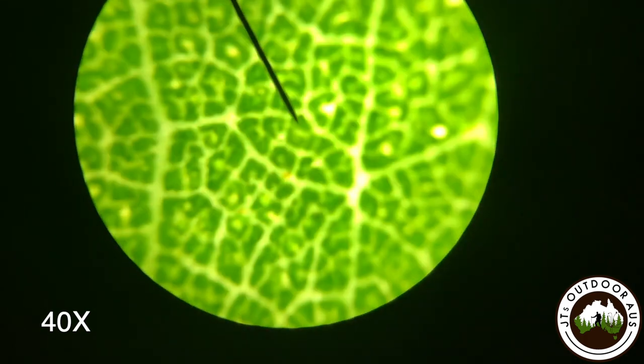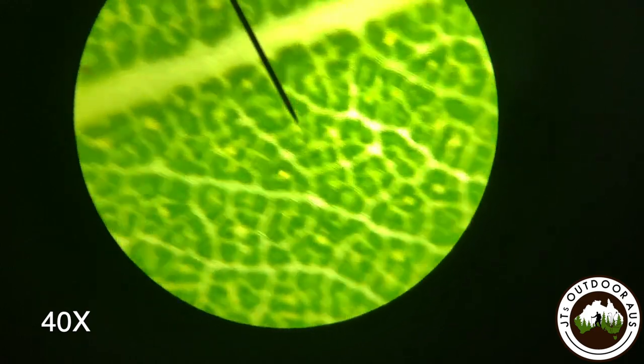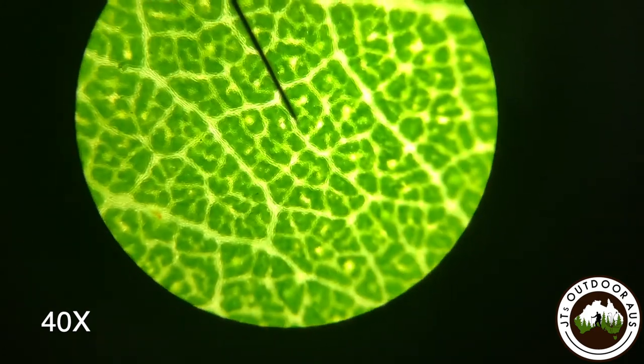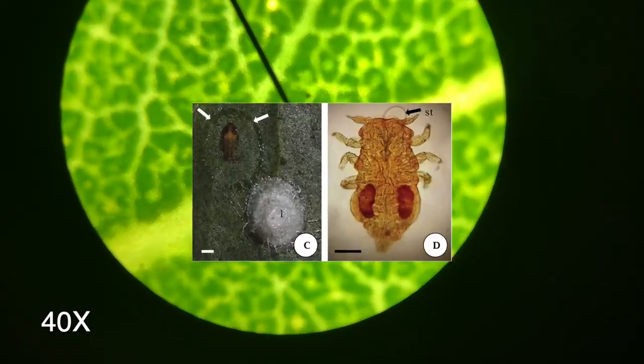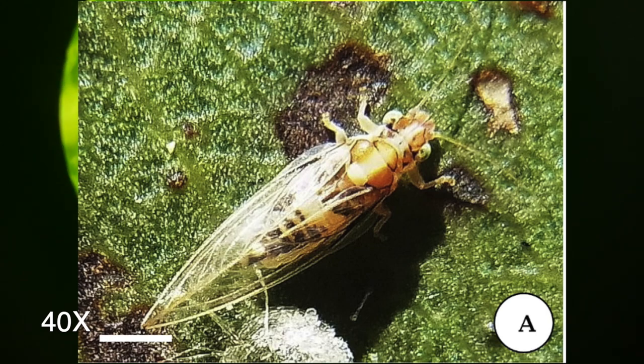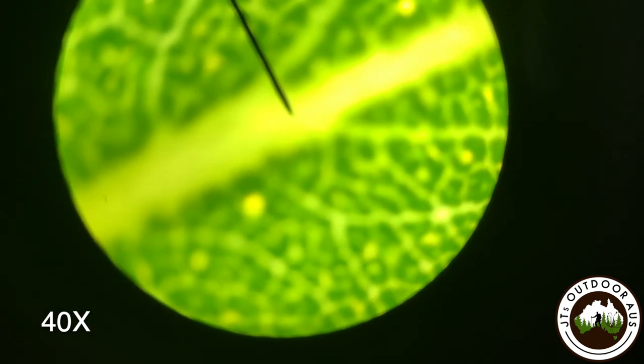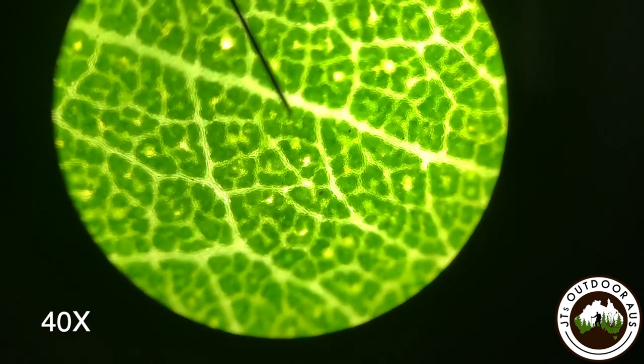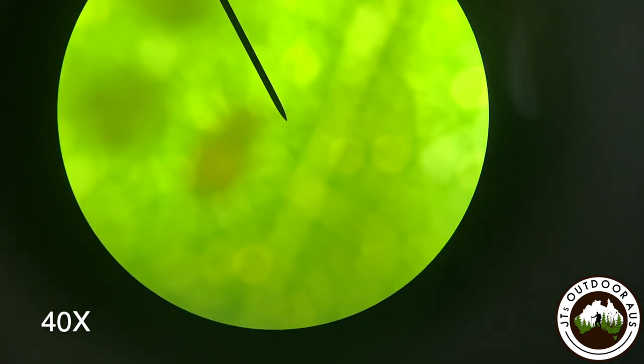So that was pretty cool. I was pretty surprised to see that guy there. It was a Glycaspis minifera which is in the family Spondyliaspididae and the superfamily Psylloidea. So those photos there are from a research paper I will throw in the comments which had a little bit of information about them and I was really able to identify a couple of different things.